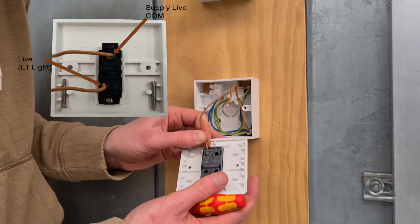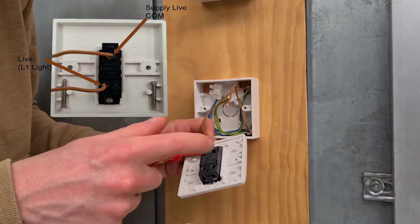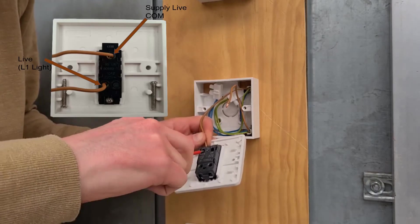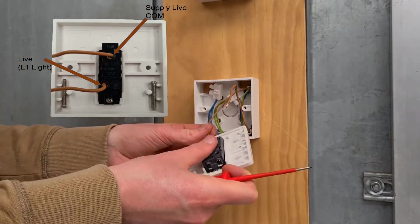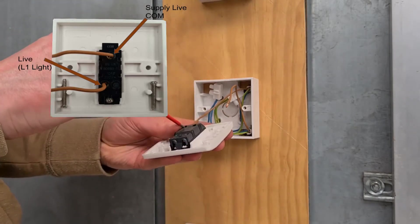On the back of the switch plate, there should be terminals labeled COM and L1. Connect the supply live core from the fuse spur to the COM terminal, and connect the live core from the lights to L1. Use a screwdriver to tighten terminal screws.